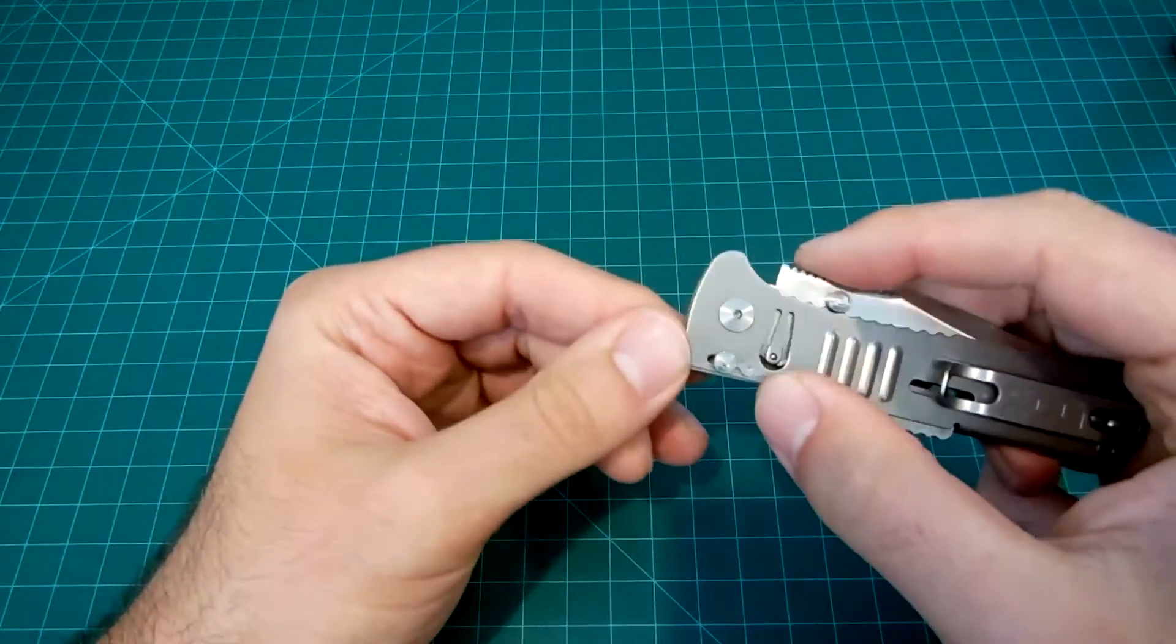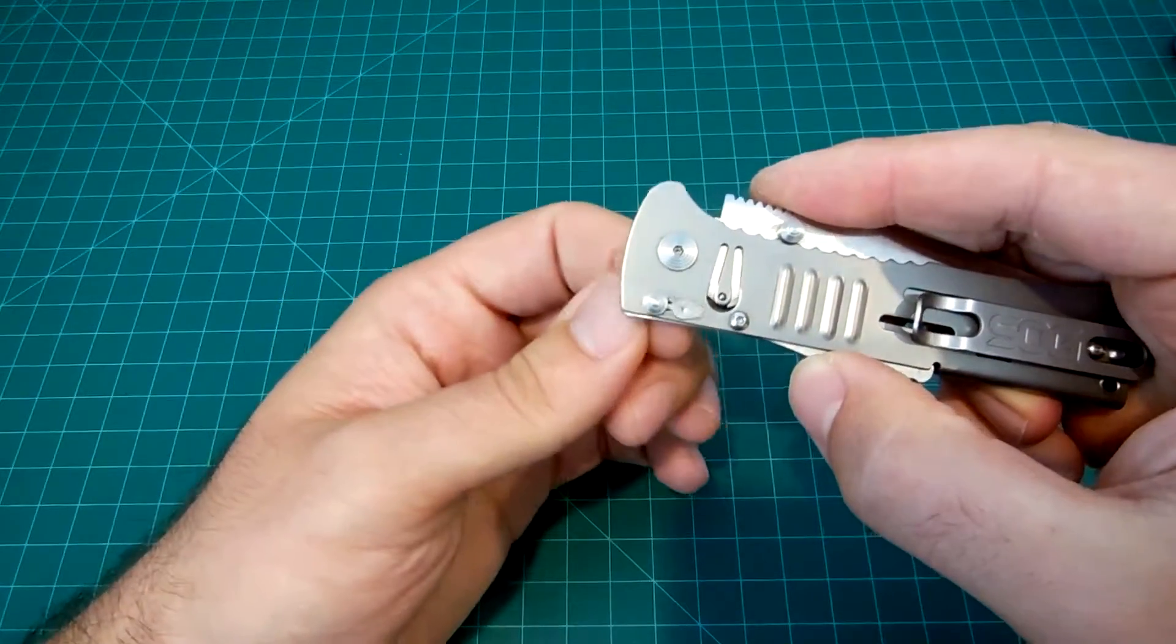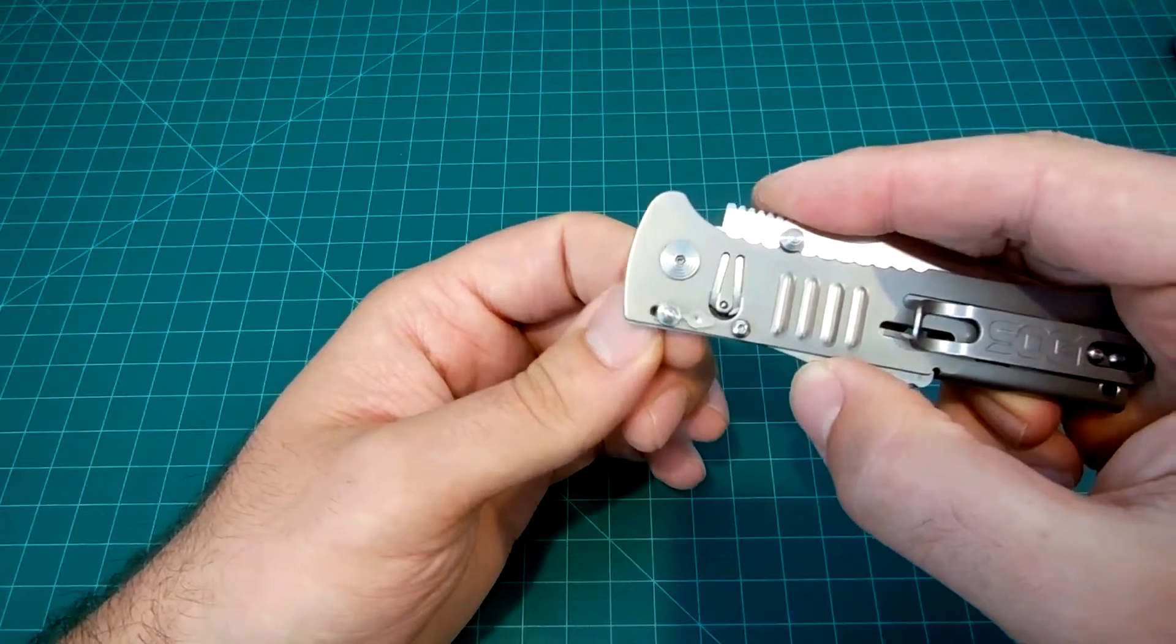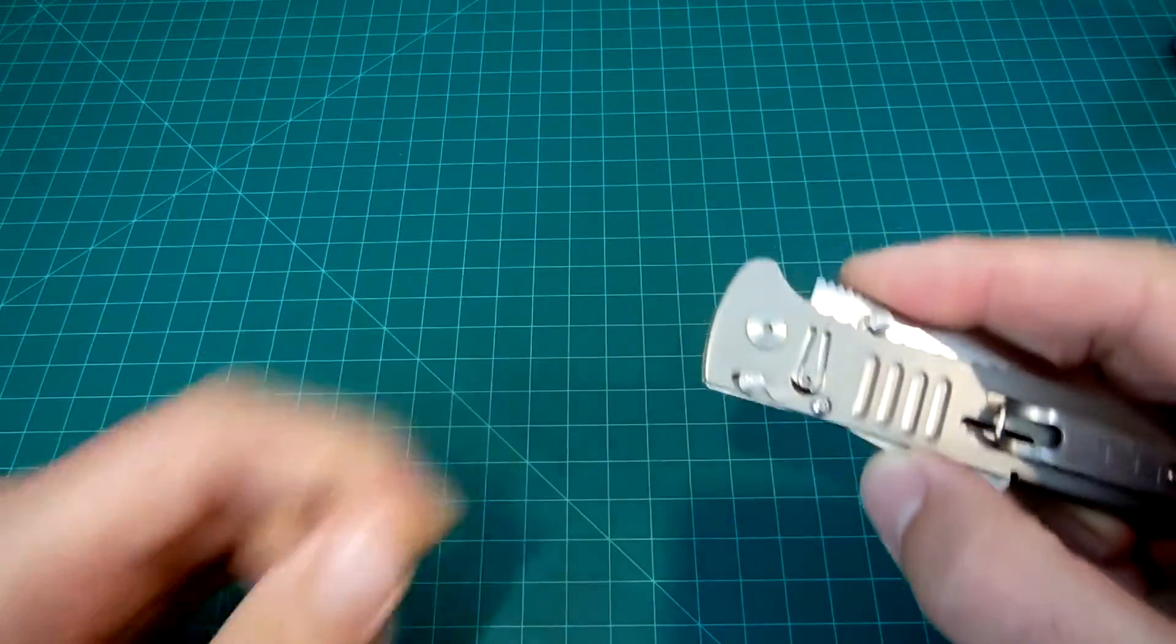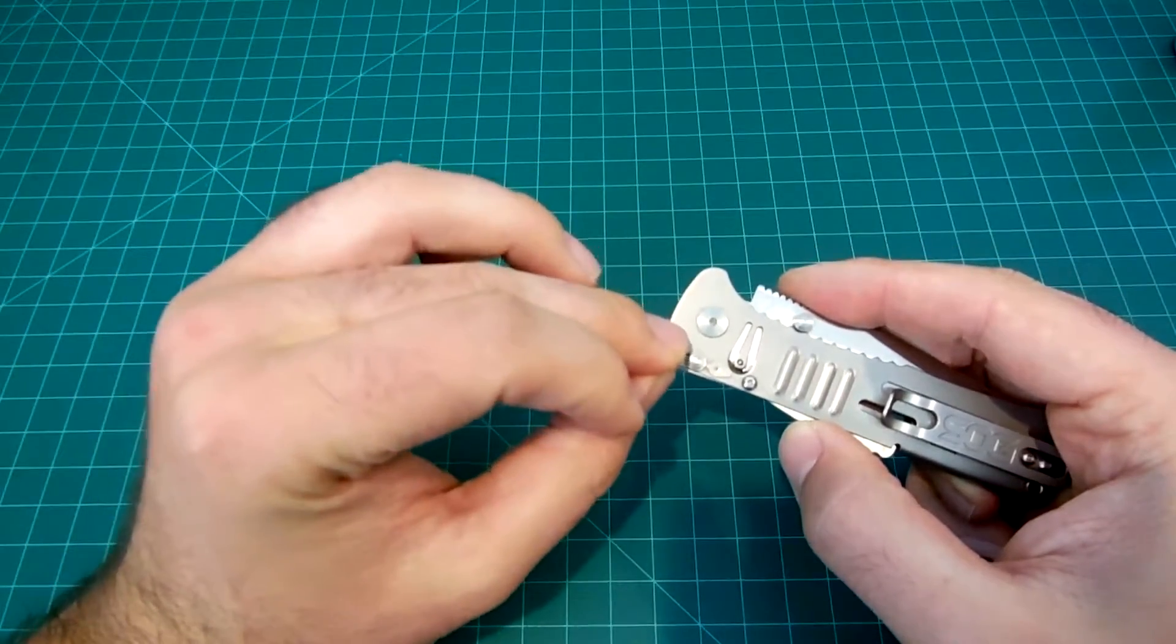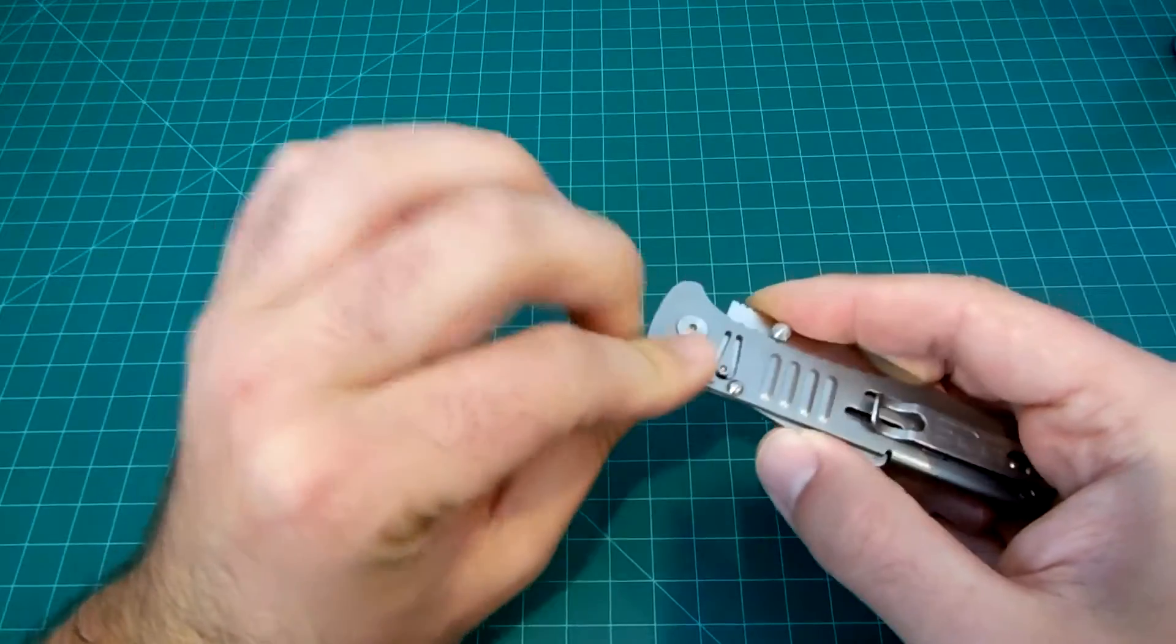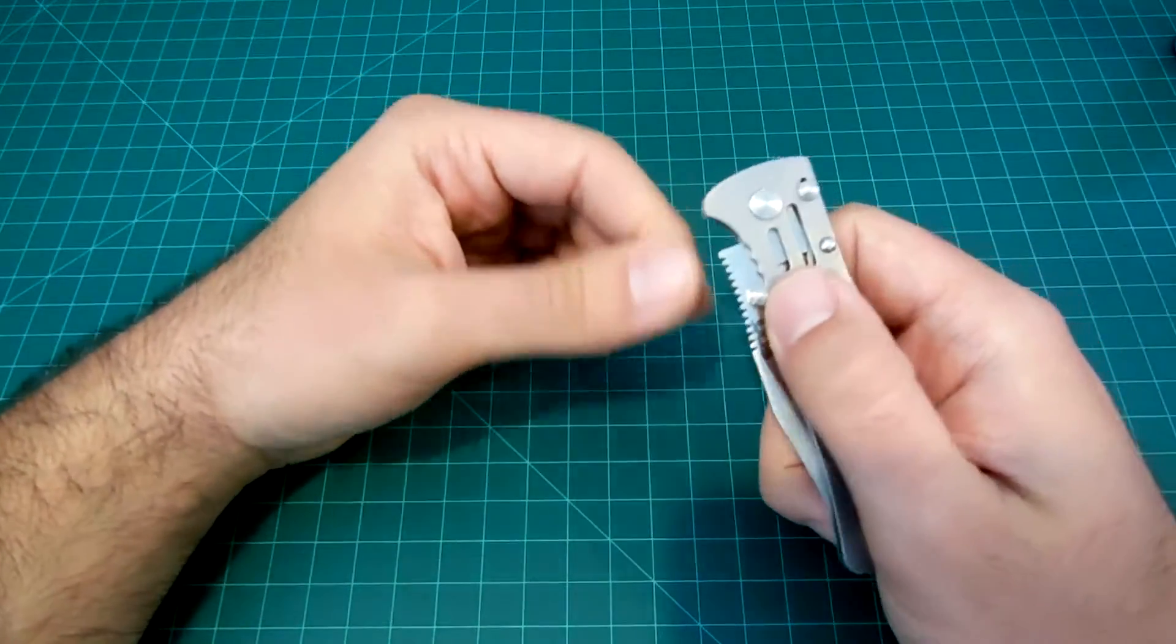But what I don't like about it is the fact that it's not a positively clicking safety. As you can see, there's a bit of friction that's supposed to hold it but it's not much. I would have liked it if they had done a bit of a detent that would help it click forward and back.